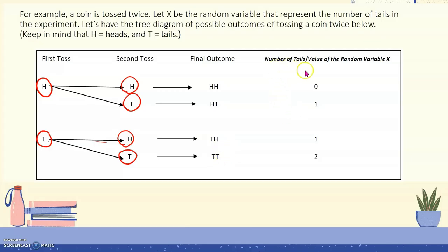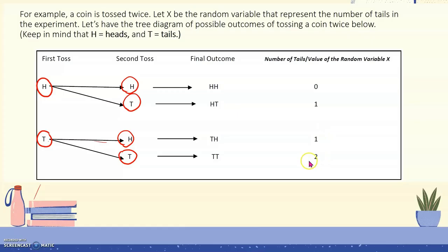Here in our last column, number of tails, or the value of the random variable X — let us not forget that we defined our random variable X to be the number of tails in the experiment. So that means the possible values of the random variable X are 0, 1, 1, and 2.